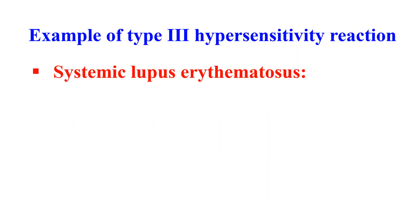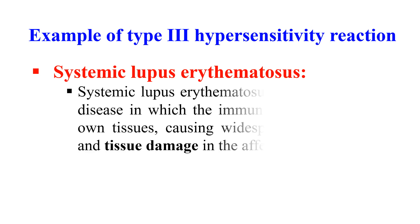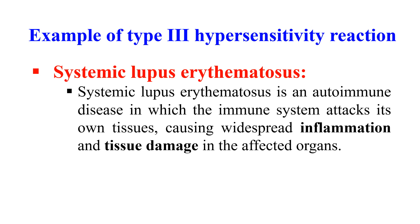An example of type 3 hypersensitivity is SLE — systemic lupus erythematosus — an autoimmune disease in which the immune system attacks its own tissue, causing inflammation and tissue damage affecting joints, skin, brain, kidney, and blood vessels.